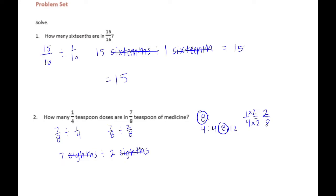The denominators cancel each other out, giving us 7 divided by 2, which equals 7 halves. Converting back to a mixed number: 2 goes into 7 three times with 1 left over, so it's equal to 3 and a half. There are 3 and a half 1/4-teaspoon doses.